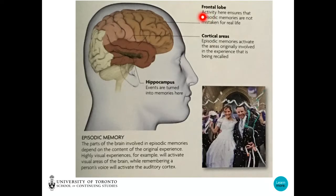The frontal lobe — activity here ensures that the episodic memories are not mistaken for real life. This is so important, I cannot emphasize enough. Do you understand? If your brain mistakes memories for real life, that can shut your brain down.